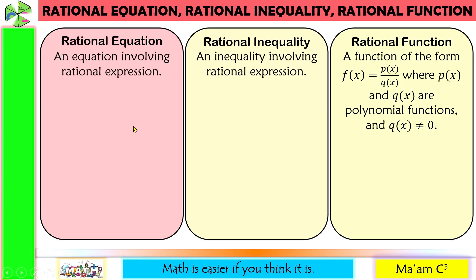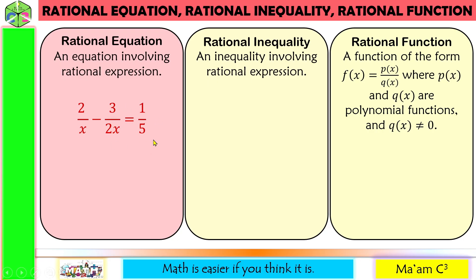Now let's have some examples, starting with rational equation. All you have to do is examine both sides of the equation — both sides should be a rational expression. So 2 over x is a rational expression, as well as 3 over 2x, and 1 over 5 is a rational expression. Make sure there is an equal sign because it is an equation. Rational expression on both sides with an equal sign — that is a rational equation.